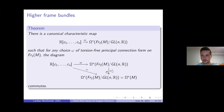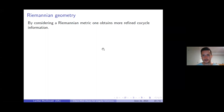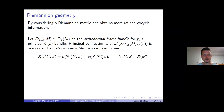We can get more refined information if we consider metric data as well as covariant derivative data. If we consider a Riemannian metric on our manifold, we can consider the bundle of orthogonal frames — linear isomorphisms that are also isometric from R^n with its canonical metric to the tangent spaces of the manifold. This is the orthonormal frame bundle associated to the Riemannian metric G, and it is a principal O(n) bundle.